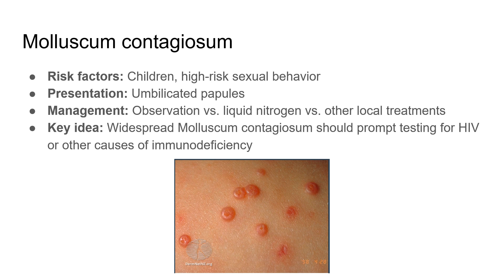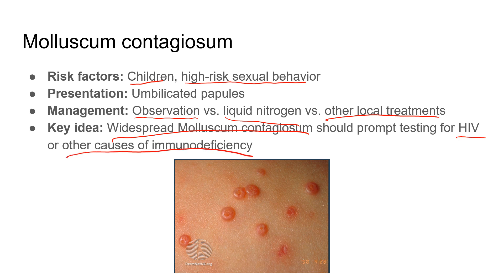Molluscum contagiosum is high yield, especially for pediatric questions, and has a very characteristic appearance. It's often seen in children; in adults it's often associated with high-risk sexual behaviors. Presentation: clusters of umbilicated papules with a central dimple. Management: usually observation — they go away on their own. As noted earlier, widespread molluscum contagiosum in an adult is not normal and should prompt HIV testing. The morphology — round papules with a central dimple — is classic.